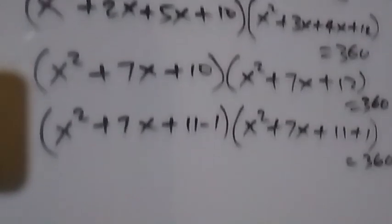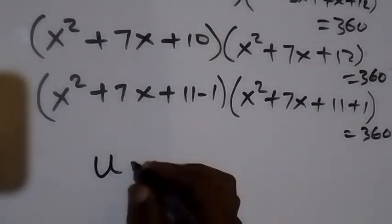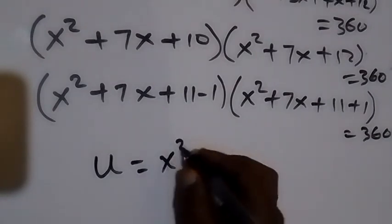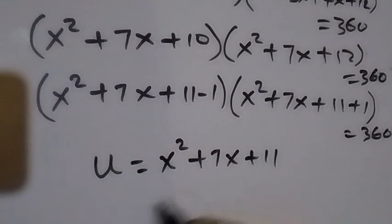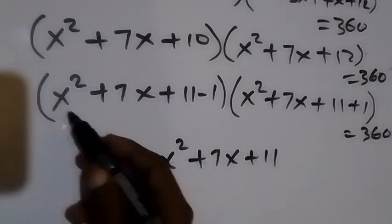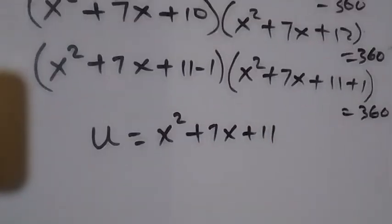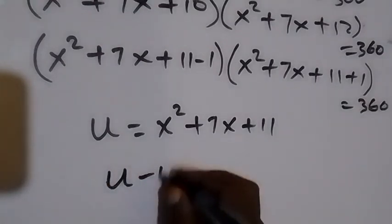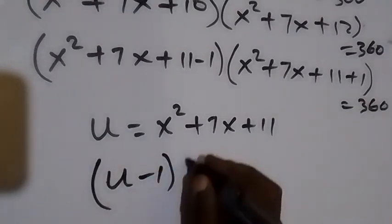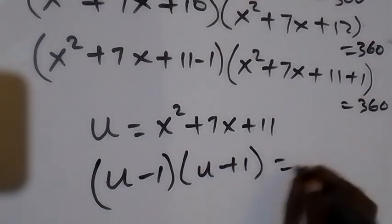Now let's use a letter to represent that. Let u = x²+7x+11. The equation then becomes (u − 1)(u + 1) = 360.